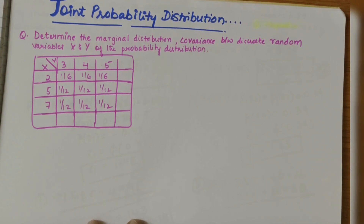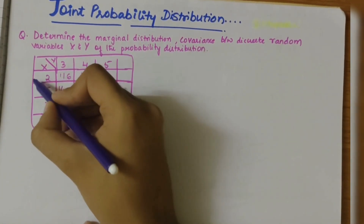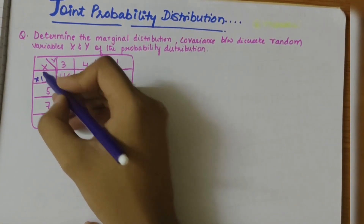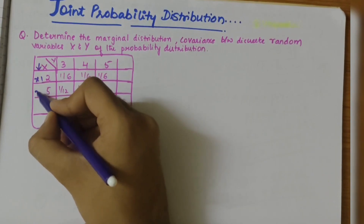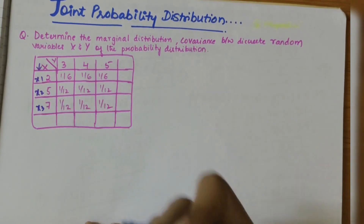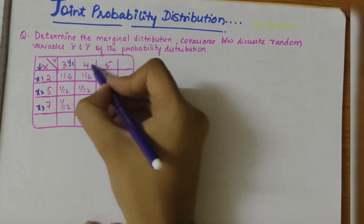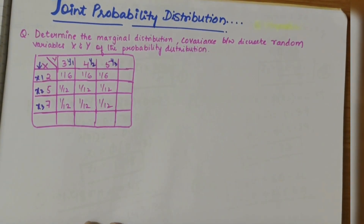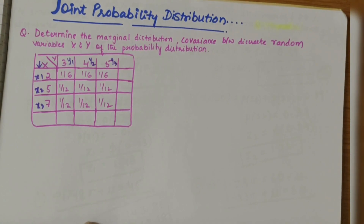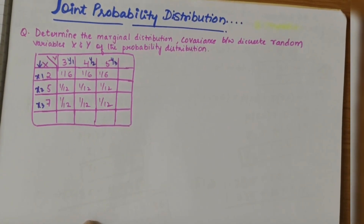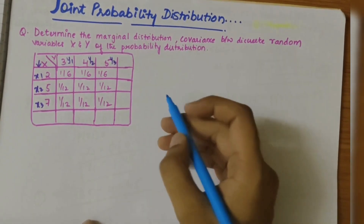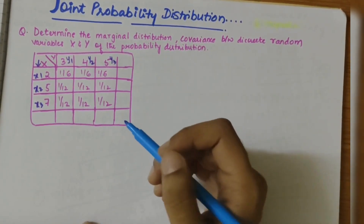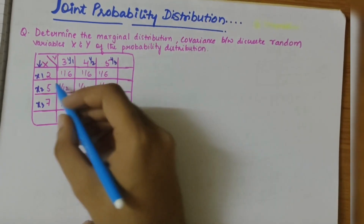Here, the probability distribution table is given. Let's consider this as x1, x2, x3 on the x-axis, and here it has y1, y2, and y3. The first part of our question is to find the marginal distribution.